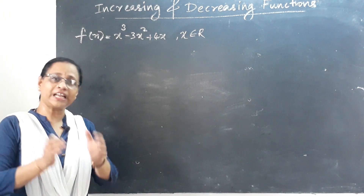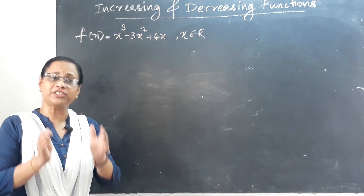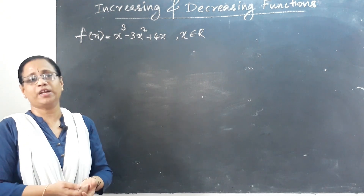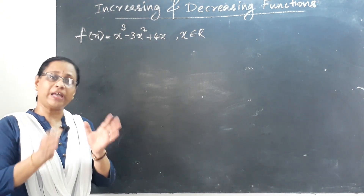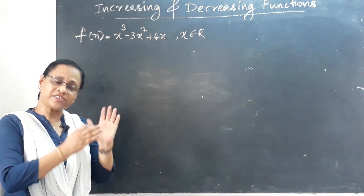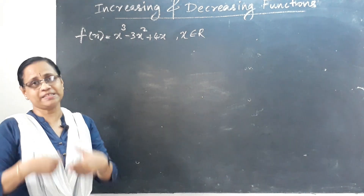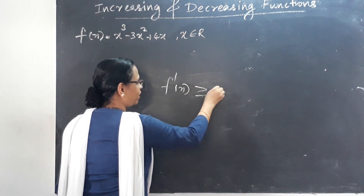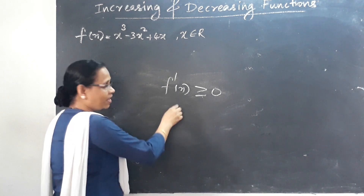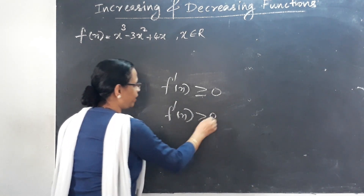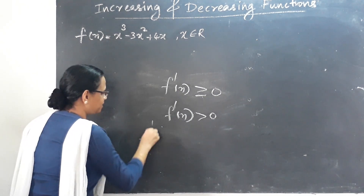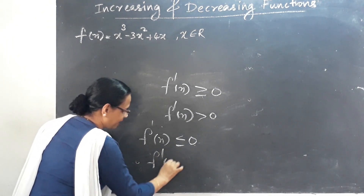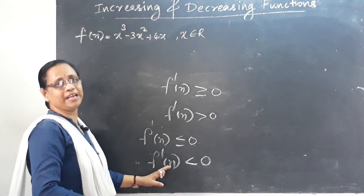To determine if a function is increasing or decreasing on an interval, we use the derivative f'(x). If f'(x) > 0 in an interval, the function is strictly increasing. If f'(x) < 0, it is strictly decreasing. If f'(x) ≥ 0, it is increasing; if f'(x) ≤ 0, it is decreasing.